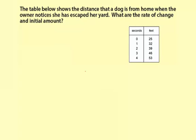The table below shows the distance that a dog is from home when the owner notices she has escaped her yard. What are the rate of change and initial amount?